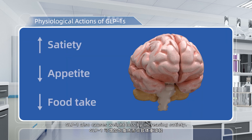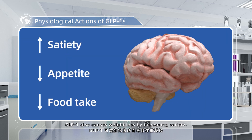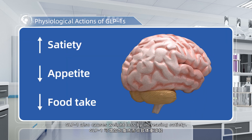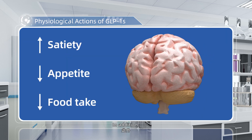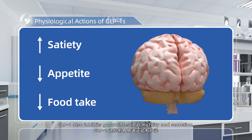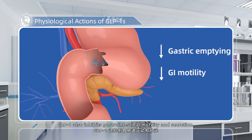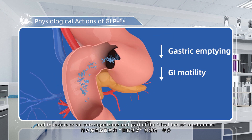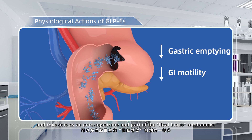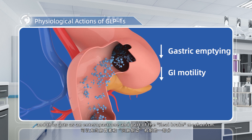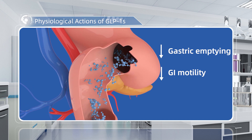GLP-1 also causes weight loss by increasing satiety. In addition, GLP-1 inhibits gastrointestinal motility and secretion, and thus acts as an enterogastrone and part of the ileal brake mechanism.